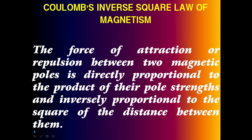The force of attraction or repulsion acts between the two magnetic poles — if the poles are the same they repel each other, if the poles are opposite they attract each other. When the distance is maximum, the force of attraction or repulsion is very low. If the distance between the two magnets decreases, the force of attraction or repulsion increases, based on the product of the pole strength.